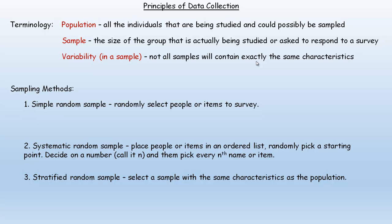One way we keep variability small so that different samples have pretty much the same characteristics is to make sure your sample size is large enough. If you're only sampling 2, 3, or 5 things, it's not as good as sampling 200, 300, or 500. So generally, the larger the sample, the more reliable it is that it will represent the population.